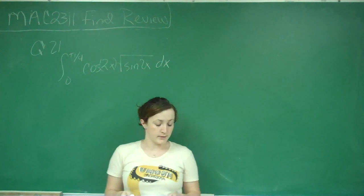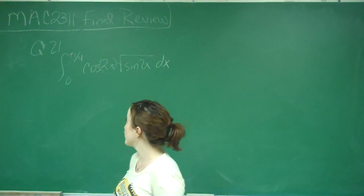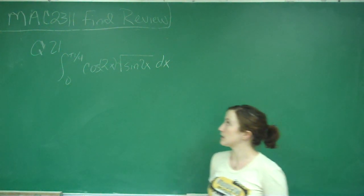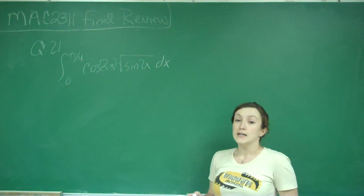This is question number 21, and it wants us to evaluate the integral from 0 to pi over 4 cosine 2x times the square root of sine 2x dx.